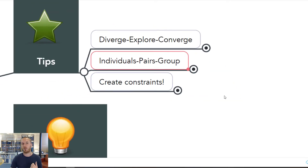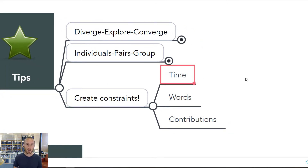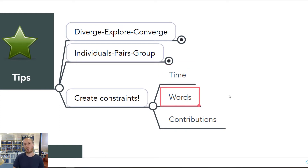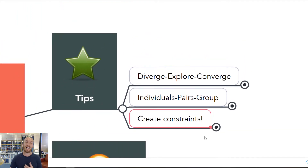Individuals, pairs, and group is a great way of managing a group brainstorm. Finally, although it might seem slightly counterintuitive, it's a good idea to create some constraints for your brainstorm. That can be constraints of time — saying to a group, we're going to give you just five minutes to brainstorm this topic — or constraints like advising people to use only one, two, or three words, to get away from long sentences. You could also create a constraint around how many things someone can contribute, like asking for just their top three ideas. Constraints help you start to narrow the focus once you get into that explore and converge phase.